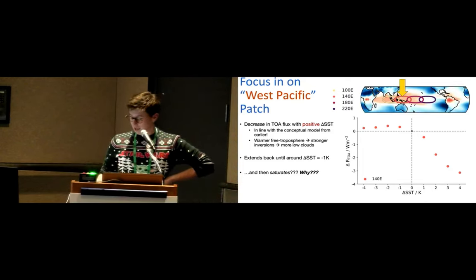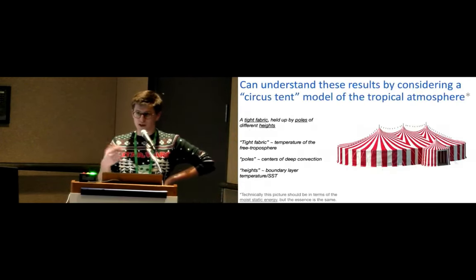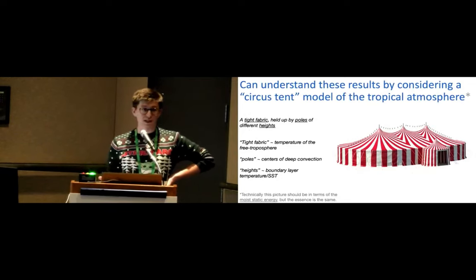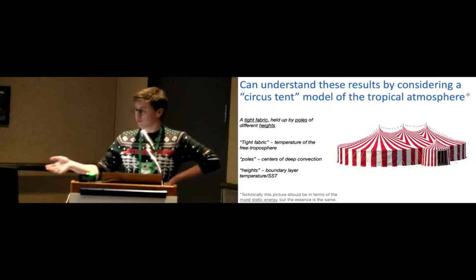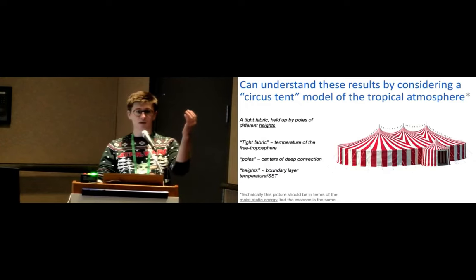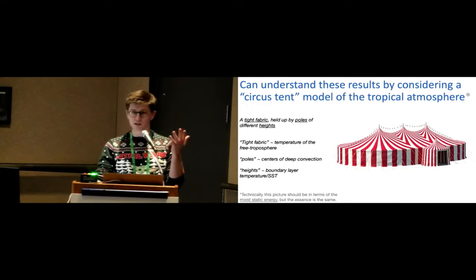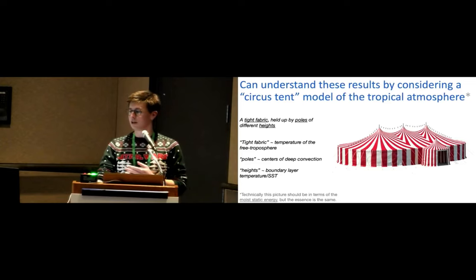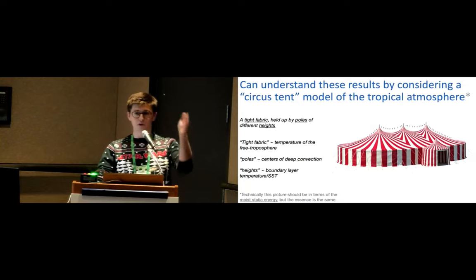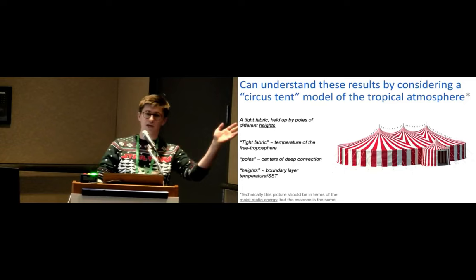So we want to understand why that is. And in this work, we suggest that you can intuitively think about these nonlinearities if you picture the tropical atmosphere as a circus tent. So in case you don't know what that is, that's a kind of tent that looks something like this. And it's basically a tight fabric held up by poles in different locations, potentially of different heights. Now, if you interpret this circus tent with the fabric being the temperature of the free troposphere, the poles as being centers of deep convection, and the height of these poles as being the SST, or the boundary layer temperature, or you can think of this all in MSC as well, but temperature gives you the right type of thing.